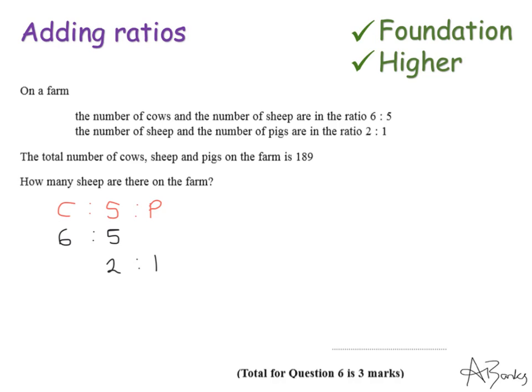Now if you look, the sheep is the one that they've used in both of these ratios. I've got sheep to cows and I've got sheep to pigs. So these values here, I'll need to find a common multiple of both 2 and 5 in order to rewrite my ratio.